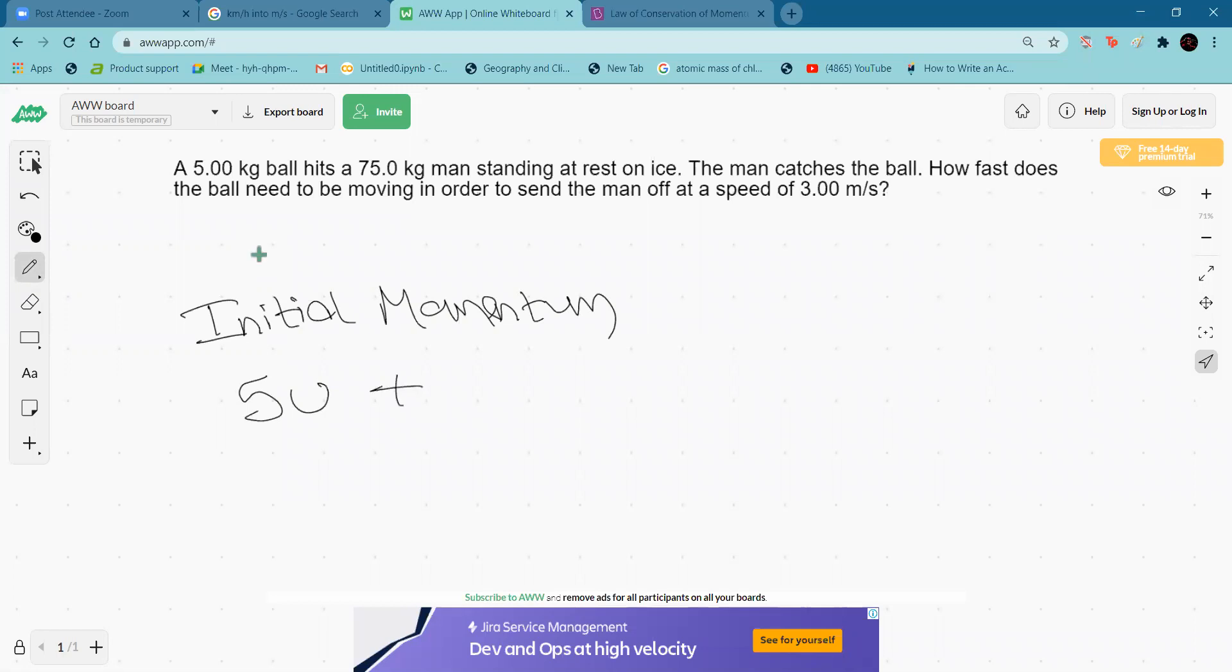As for the man, it's standing at rest, so the velocity is zero. Hence, 75 times zero is zero.